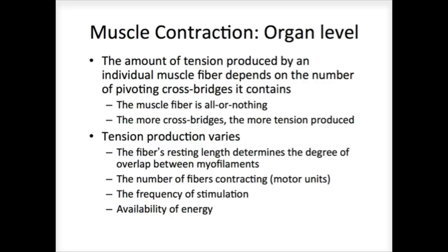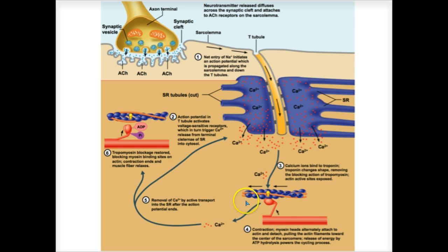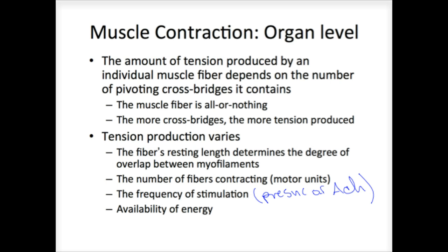The amount of tension is based on the number of fibers stimulated. This goes back to the idea of recruitment and motor units and the frequency of stimulation. If you have a constant barrage of nervous stimulation at a neuromuscular junction, even though the acetylcholinesterase is breaking down the acetylcholine, if we have a constant presence of acetylcholine, the microscopic changes within the cell keep the calcium released and keep the active sites available for cross-bridge formation to occur, and we keep contraction going.